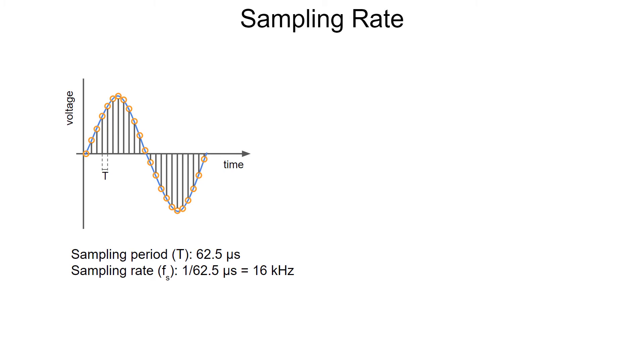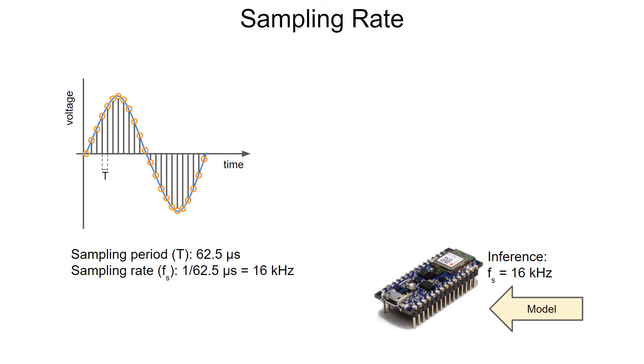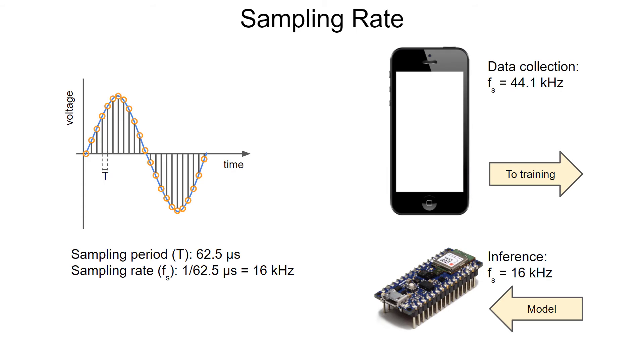In this case, something to keep in mind is that you must keep the sampling rate the same between your training data set and your deployment device. For example, let's say we want to deploy to our Arduino board, which only has a sampling rate of 16 kilohertz. However, we want to collect data with our smartphone or other device. Here, the recordings happen at 44.1 kilohertz.